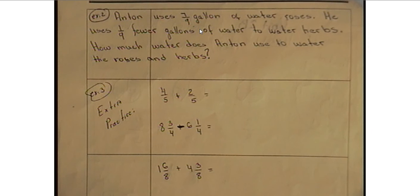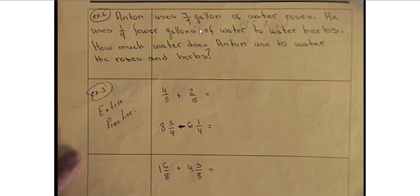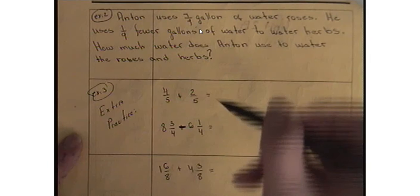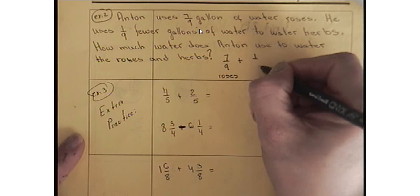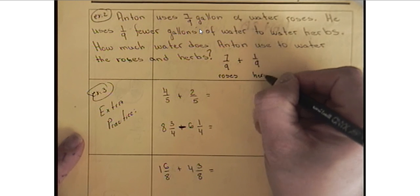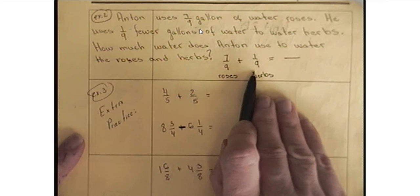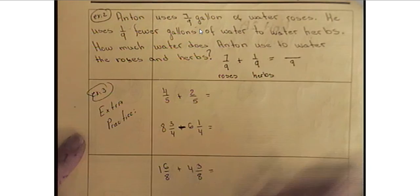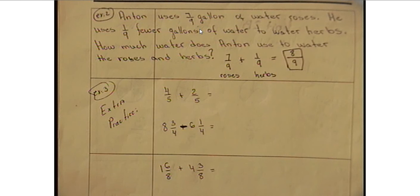Anton uses 7/9 gallon of water for roses. He uses 1/9 fewer gallons of water to water herbs. How much water does Anton use to water the roses and herbs? So Anton uses 7/9 gallons of water. He also uses 1/9 fewer gallons of water to water those herbs. So he did 7/9, this is about for the roses, and he also used 1/9, so plus 1/9 for the herbs. And the question is how much water he used to water both roses and herbs. So very simple. We just need to add the two fractions, which means we copy the denominator. 7 plus 1 will give us 8. So 8/9 of the water he used in order to water both roses and herbs.